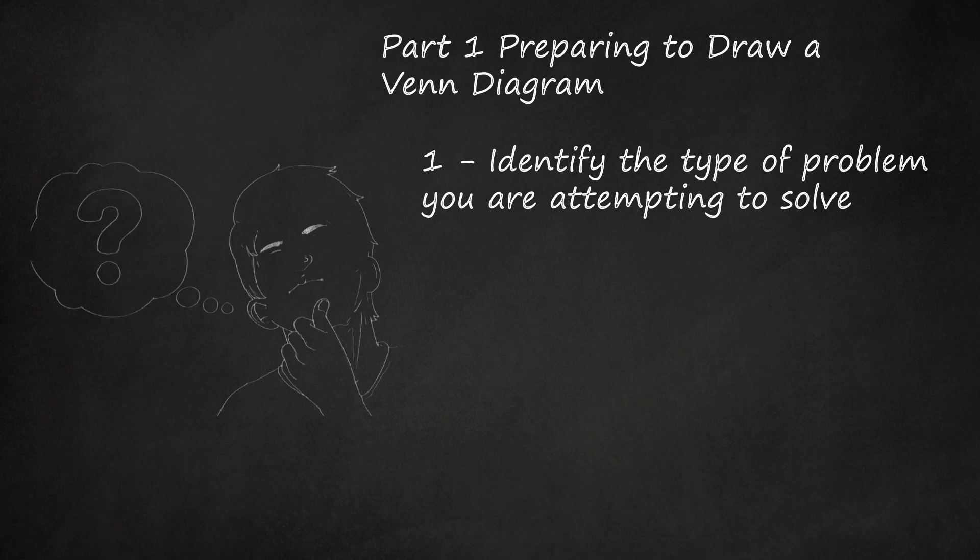Frequently, Venn diagrams are used to solve mathematical word problems, such as: 20 students out of 40 are taking algebra, and 13 out of 40 are taking creative writing. If 5 students are in both classes, how many are in neither class?